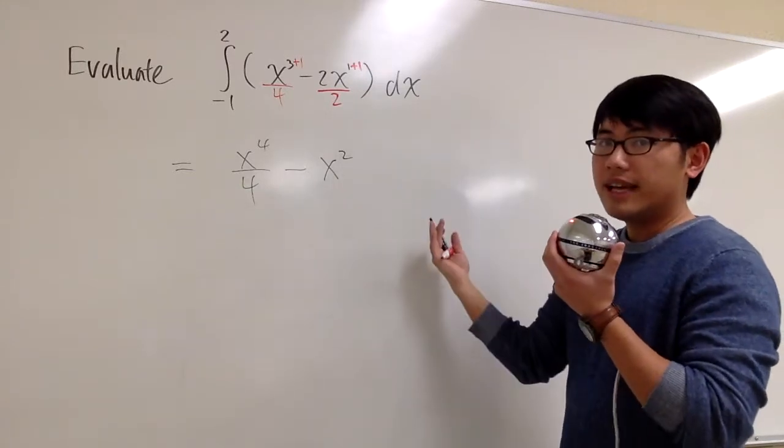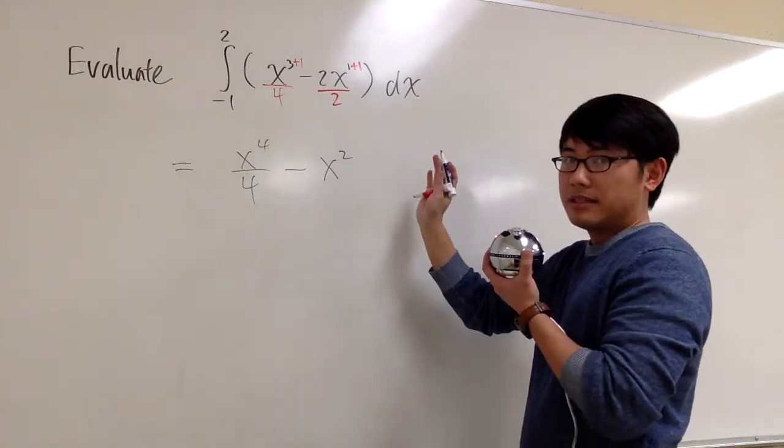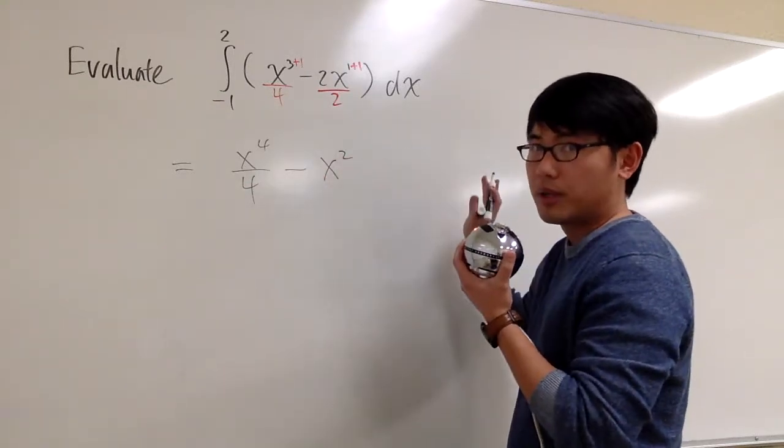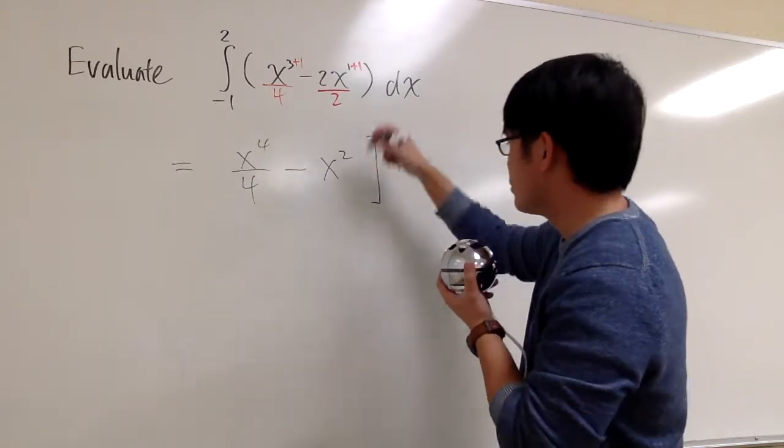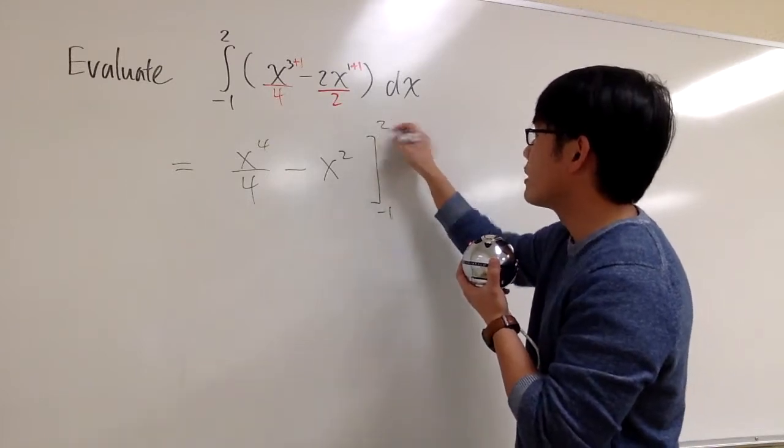This right here, it's the anti-derivative. And now, we have the numbers right here. We don't need to worry about plus c, because we just need to find an anti-derivative. Don't worry about plus c. And we just draw the right-hand brackets like this, and indicate negative 1 and 2.